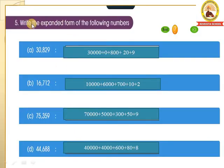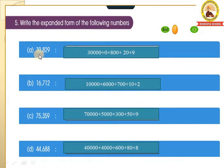Now let us see the 5th one: write the expanded form of the following numbers. First one is given here. A: 30,829. It is in the standard form and we have to expand it. In the expanded form, 3 is in which place children? 3 is in the 10,000th place.